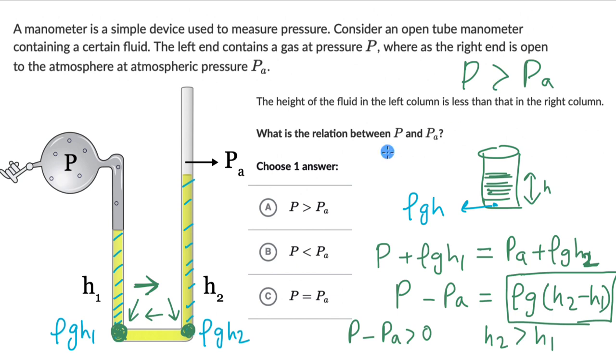And we can also try to understand it by looking at the diagram. We see that the fluid is pushed more on the left hand side compared to the right hand side. You can see it's below and the fluid over here, H2 is more.